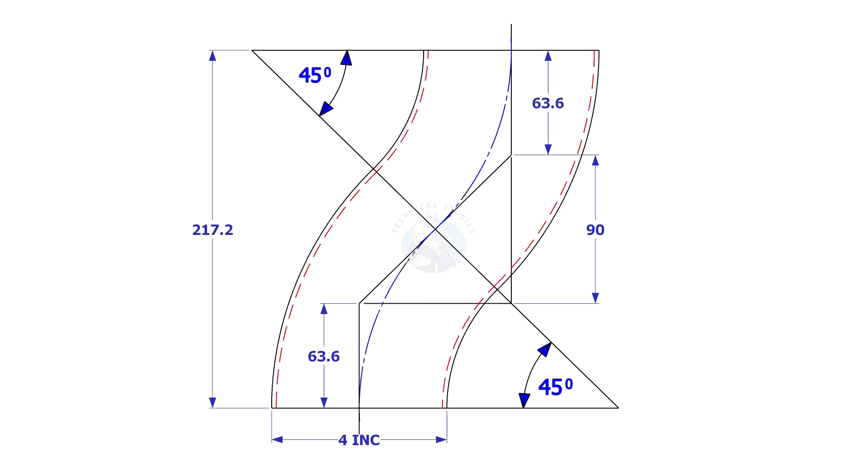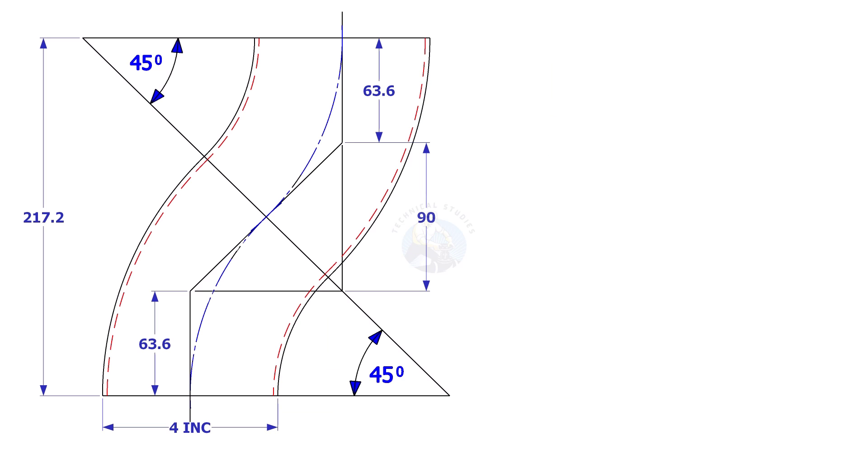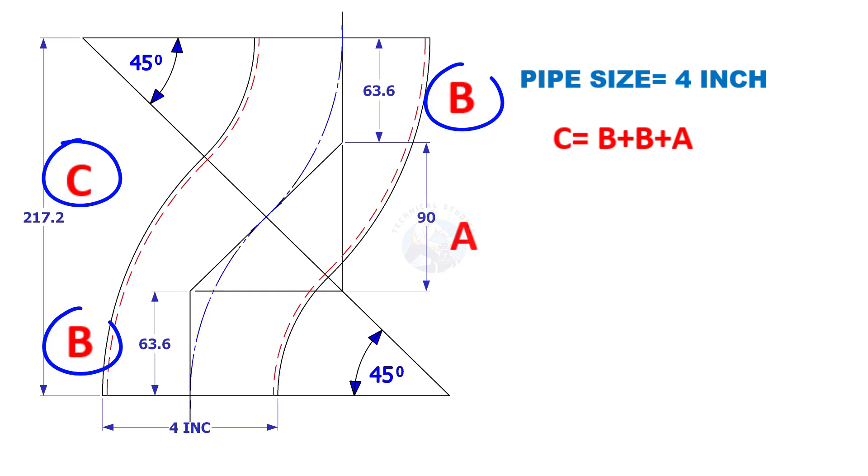Assume that the elbow diameter is 4 inches. We have to calculate the elbow center of a 45-degree elbow. The height C is equal to B plus B plus A.